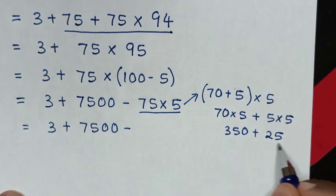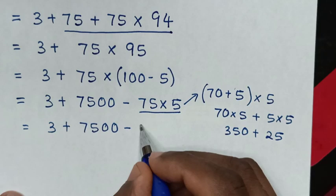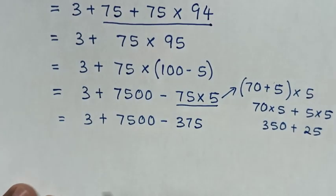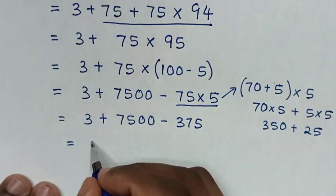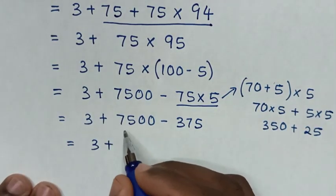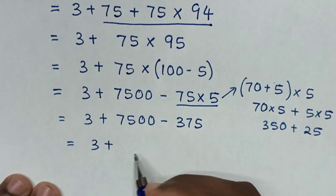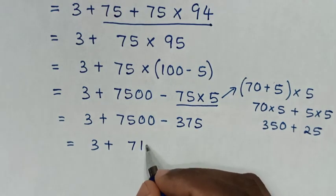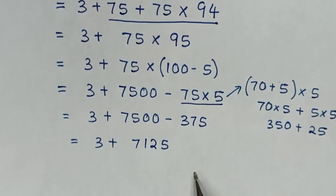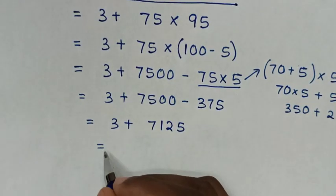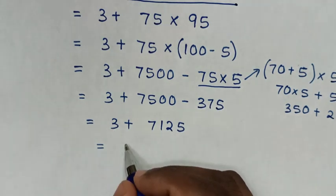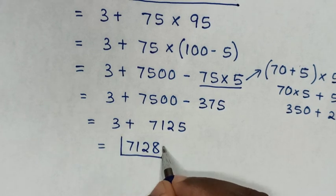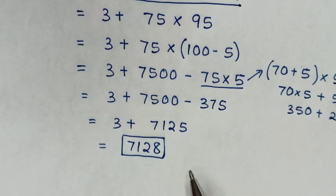Then 350 plus 25 is 375. So in the next step it will be equal to 3 plus 7,500 minus 375, which is 7,125. Then it will be equal to 7,128, so 7,128 is our final answer.